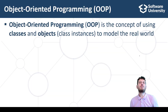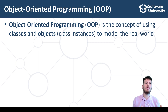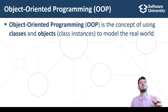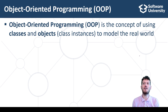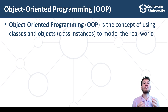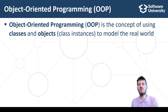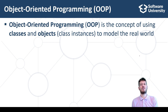Object-oriented programming, OOP, is the concept of using classes and objects to model the real world. Classes are sets of data fields together with methods, which are functionally designed to interact with the data fields and other objects. Classes define the structure of information objects, the data they hold, and the operations they can perform. Objects are the instances of the classes, holding certain values in their data fields.